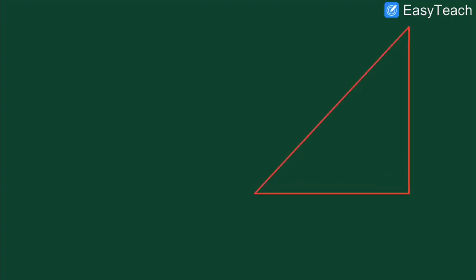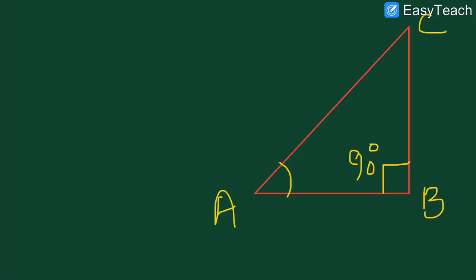Ab hum ek triangle draw karte hai — a right-angled triangle — aur right-angled triangle ke vertices ke naam hum likhte hain: A, B, aur C. Since it is right-angled at B, angle B is equal to 90 degrees. Ek angle select karte hain — angle A — aur isko theta maanenge. Toh humane ek angle 90 maana aur doosra angle theta.